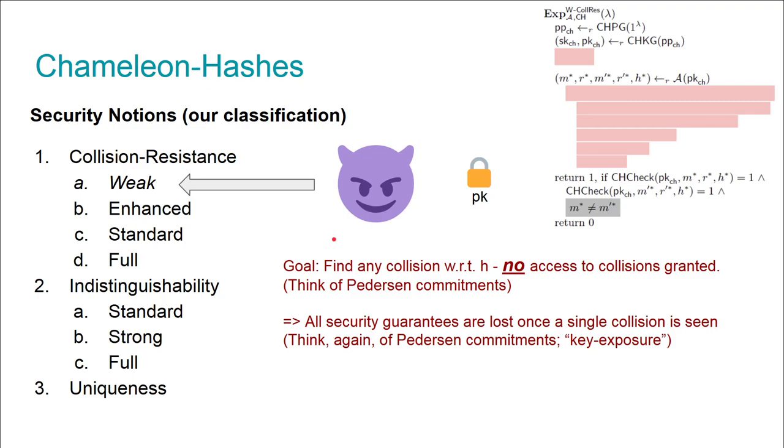However, that also means that if, for whatever reason, the adversary does gain access to a collision, all security guarantees are lost. Think again of Pedersen commitments: if you see a collision, you can extract the exponent, and then the binding property no longer holds. In the case of chameleon hashes, if you can extract the secret key due to a collision, it's called the key exposure problem.